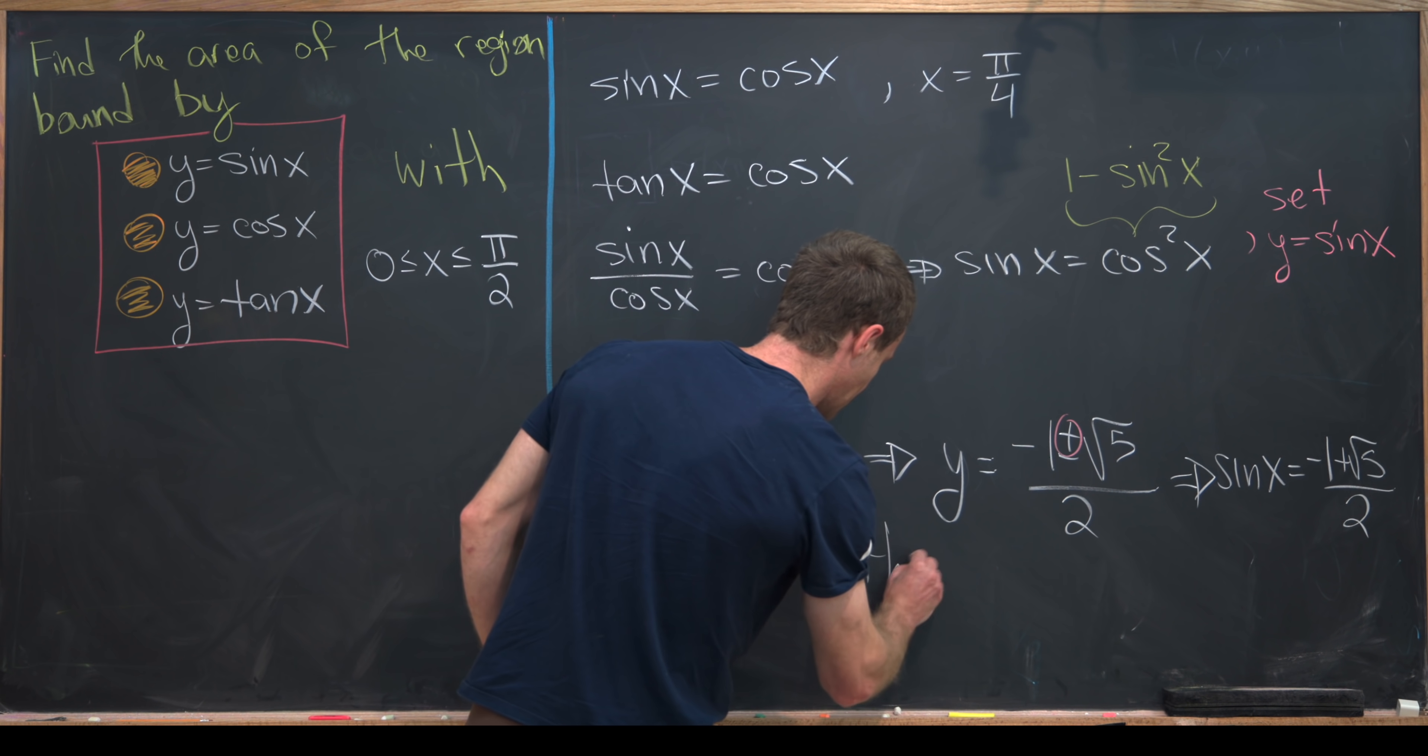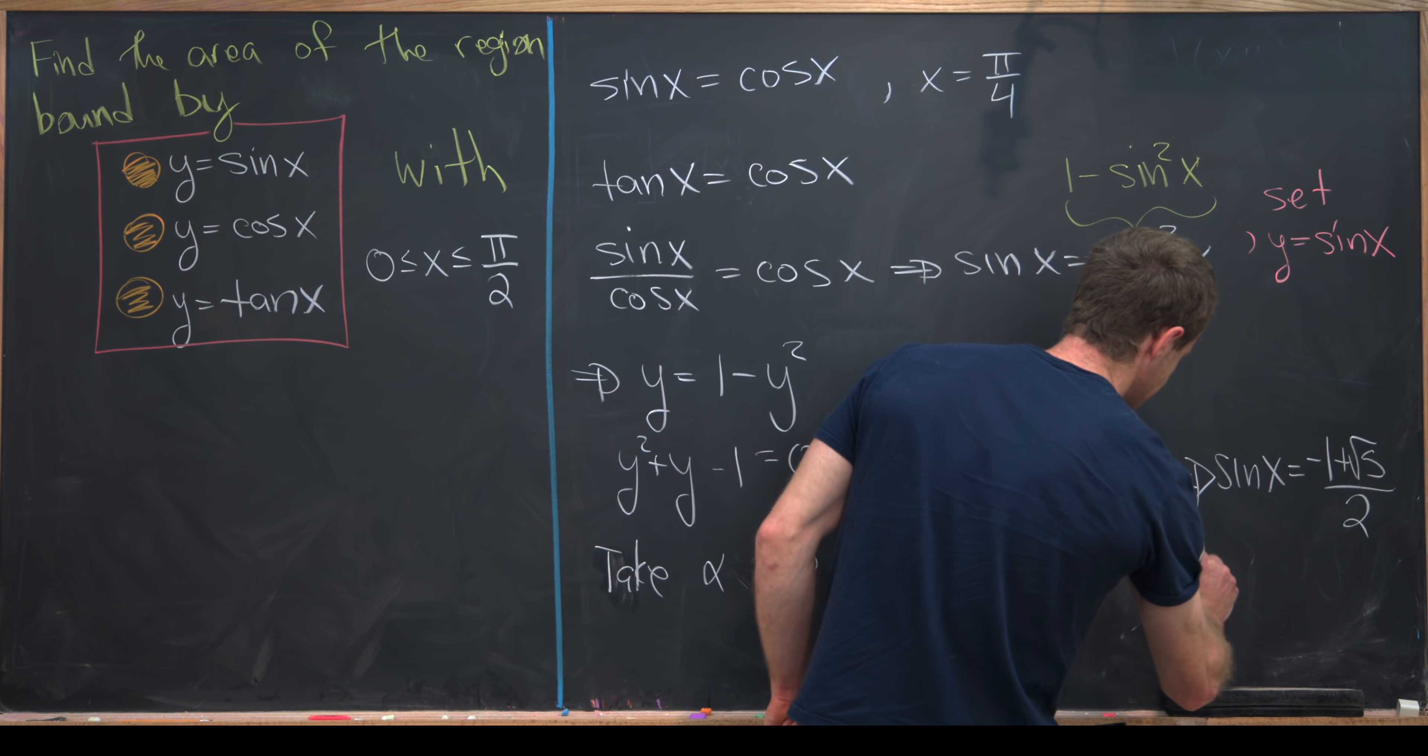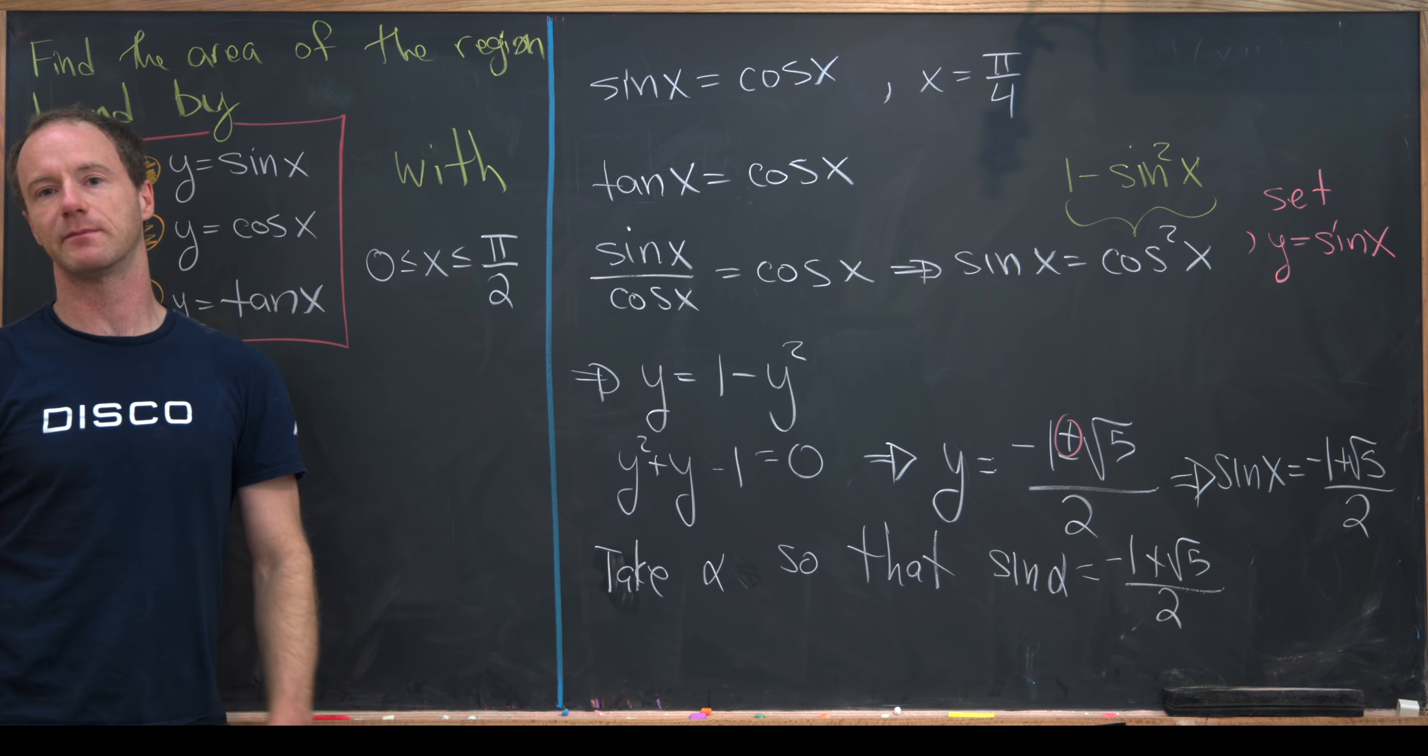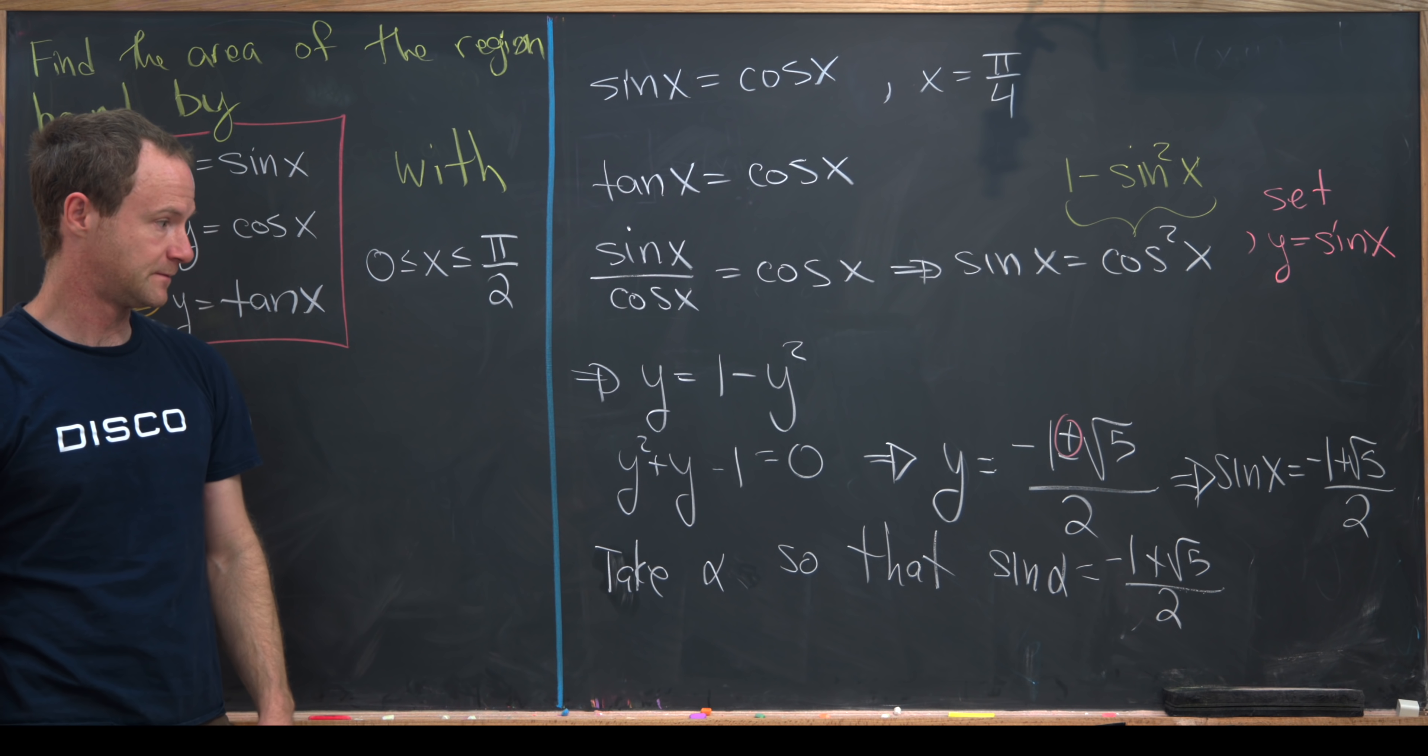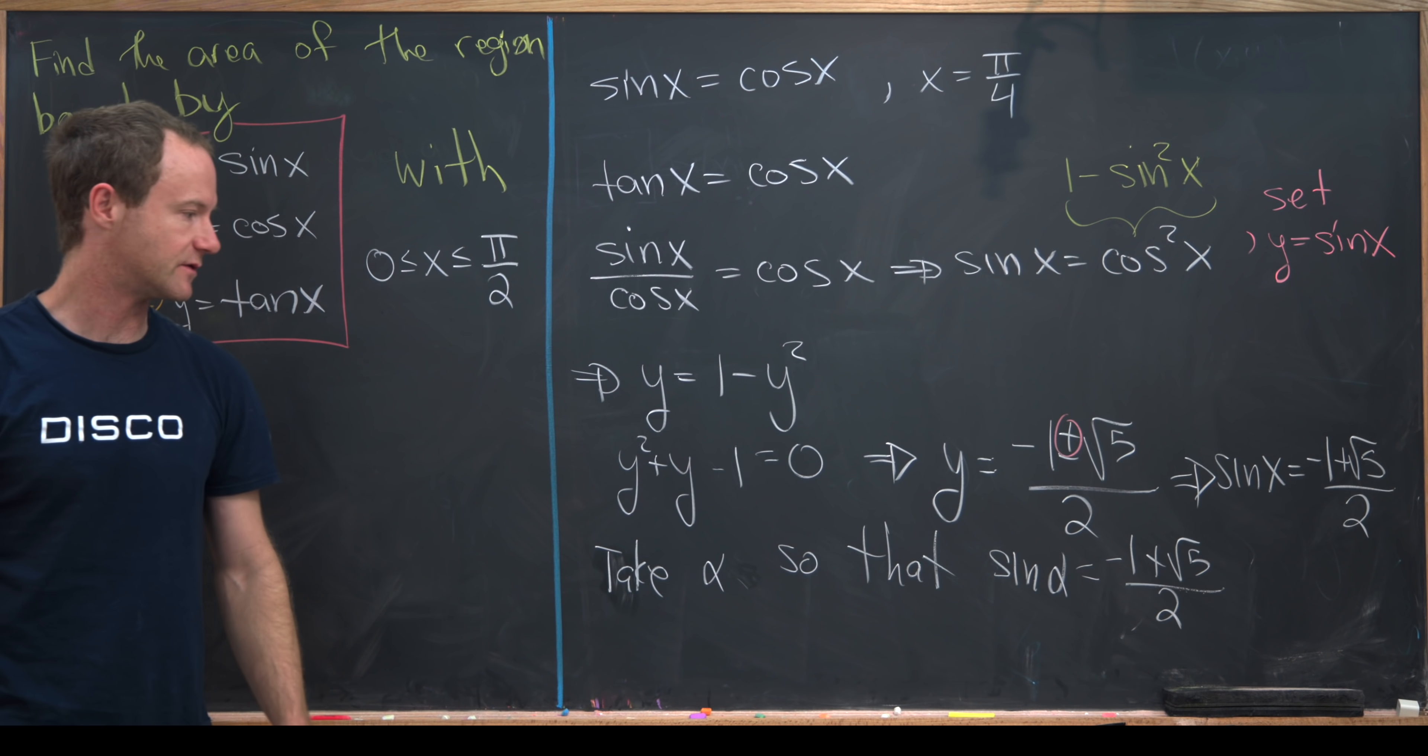So let's just take alpha to be the angle that satisfies this equation. So I'll say take alpha so that sine of alpha is equal to negative 1 plus the square root of 5 over 2, and alpha is between 0 and pi over 2. We know that's possible because sine of 0 is 0, sine of pi over 2 is 1, so sine has to go through this value by the intermediate value theorem.